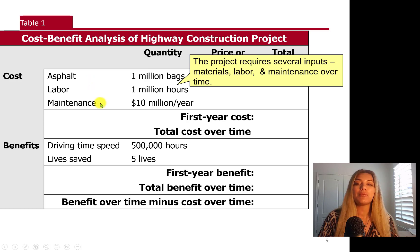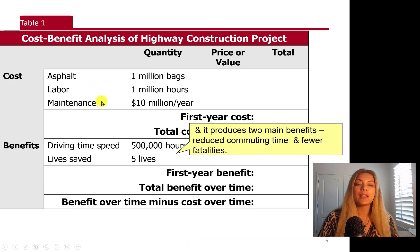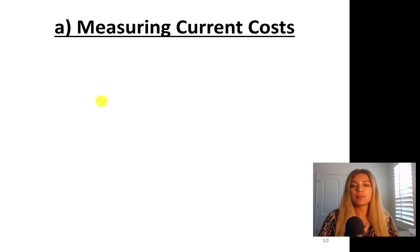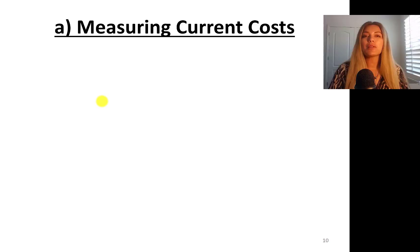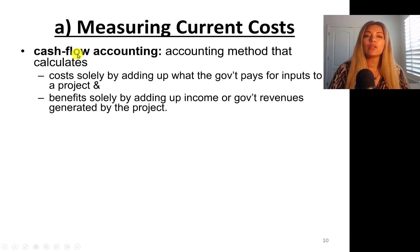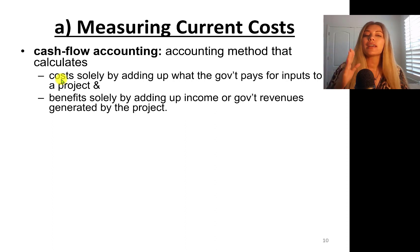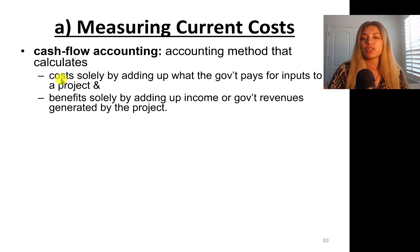The project requires several inputs — materials, labor, and maintenance over time — and produces two main benefits: reduced commuting time and fewer fatalities. Now let's talk about measuring current costs. The cash flow accounting method calculates costs solely by adding up what the government pays for inputs, and benefits only by adding up income or government revenues generated by the project.